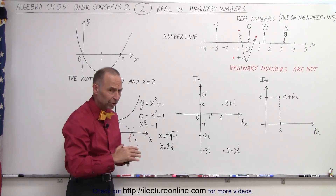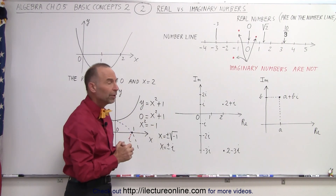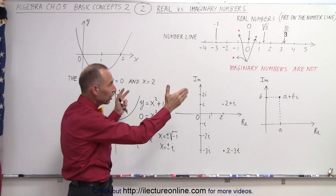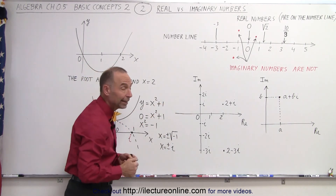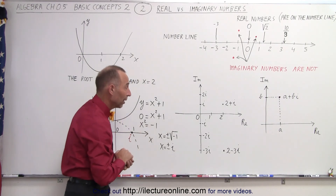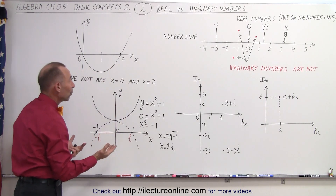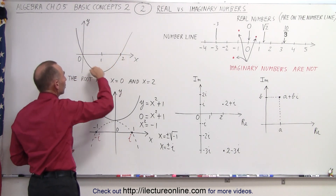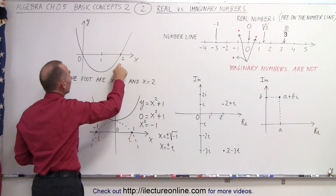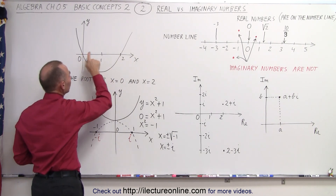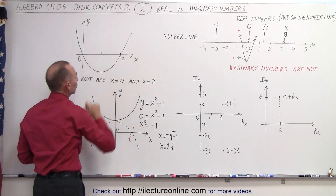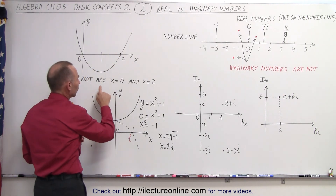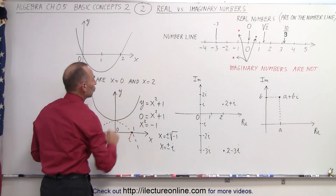Later on we'll have additional videos explaining how to deal with imaginary numbers, but for now it's sufficient to realize there are real numbers which exist on the number line and imaginary numbers which are not on the number line. Here are some examples of why we need both in algebra. Here's a graphical representation of a quadratic equation that crosses the x-axis at two points: when x equals zero and when x equals two. So it has two real roots.